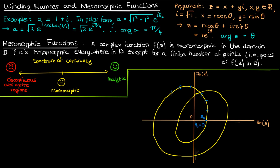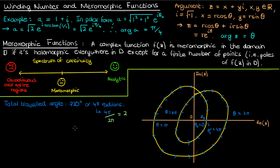Now from z0 we'll go around the curve until we end back up at z0. Once we get to this left end, for instance, our argument will be pi. Once we get back to the right end our argument will be 2pi. We keep going until we get back to z0, in which case we'll be at 3pi over here, and then 4pi once we get back to z0. Throughout this journey we've gone 720 degrees or 4pi radians around the origin. If we divide this traveled angle by 2pi we end up with 2, which is the winding number of c with respect to the origin.